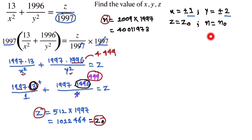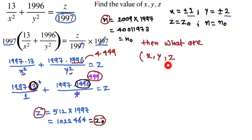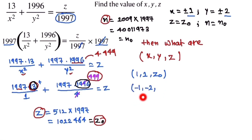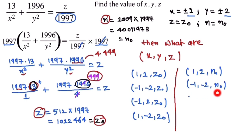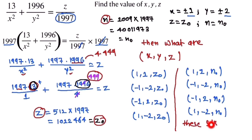Now we list all possible values of x, y, and z. The solutions are: (1, 2, z₀), (−1, −2, z₀), (−1, 2, z₀), (1, −2, z₀), (1, 2, n₀), (−1, −2, n₀), (−1, 2, n₀), and (1, −2, n₀). There are 8 solutions total.